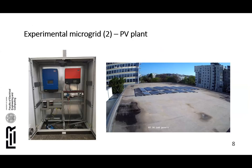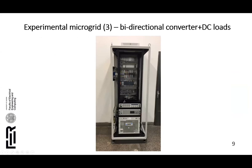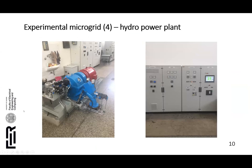Here you can see the PV plant at the laboratory microgrid. This is the cabinet where the bidirectional converter and two DC electronic loads are located. This is the small-scale hydropower plant available at the laboratory: the figure on the left shows the turbine housing and synchronous generator, and the figure on the right shows the control cabinet and power supply cabinet for the hydropower plant.